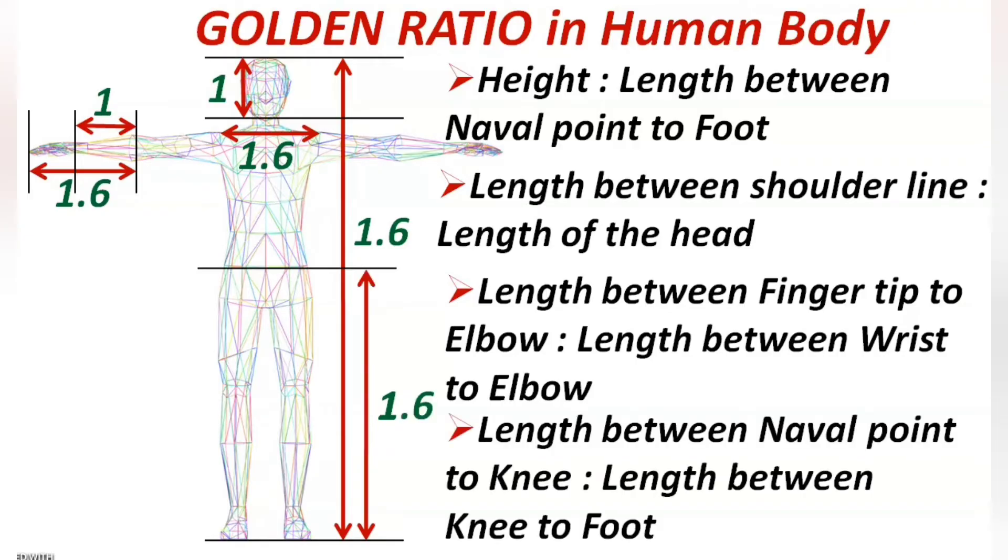Similarly, another ratio: length between navel point to knee is to length between knee to foot. If the length between navel point to knee is 1.6 units, then the length between knee to foot will be one unit.